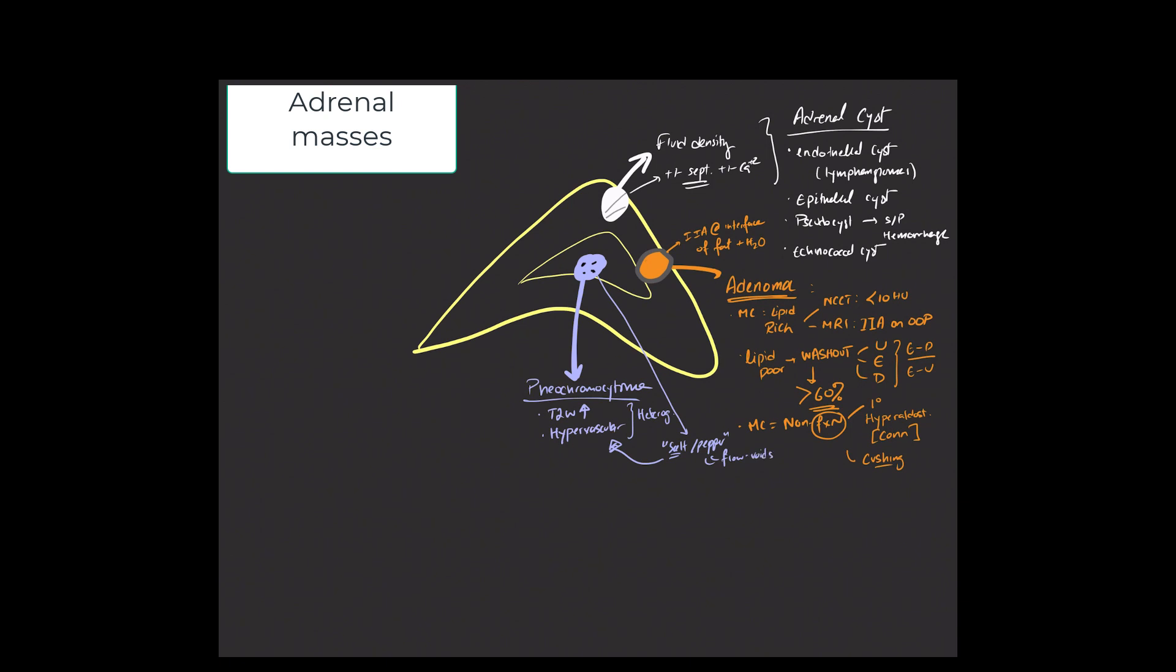A couple of things to know about pheochromocytomas. Epidemiologically, they follow this rule of 10, a 10% rule. 10% are bilateral. 10% end up being malignant. And the only way to diagnose that you can find on imaging is if you see mets. And so whenever you think about pheos, think about the 10% rule.